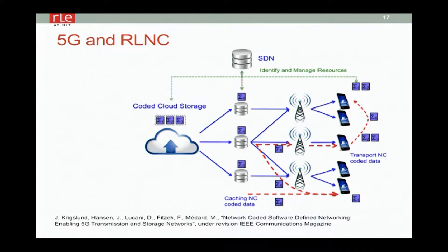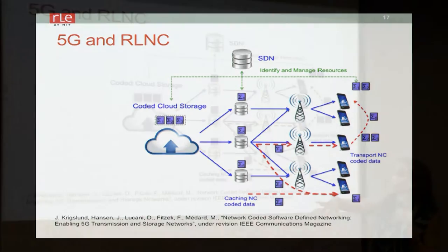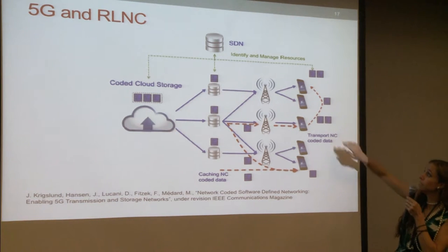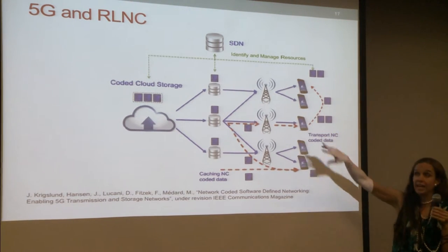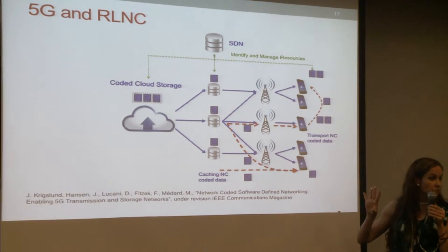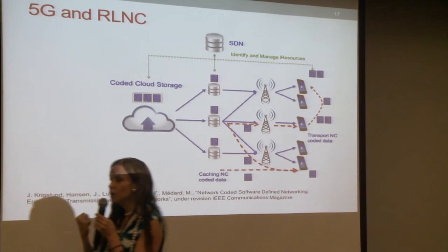So how does this relate to 5G? The vision emerging is: you have a coded cloud storage, caching at the edge, and stations — whether base stations, Wi-Fi routers, or whatever. Phones and tablets may be talking to each other and cooperating. I don't have to keep track of who has what. People just get degrees of freedom over whatever path they can from whatever source they can.